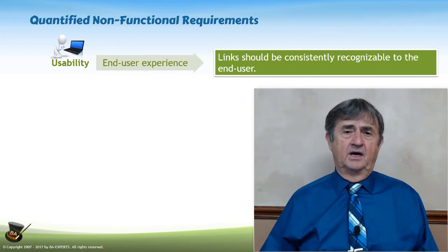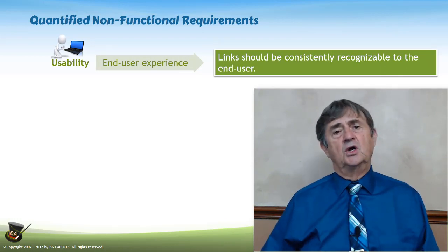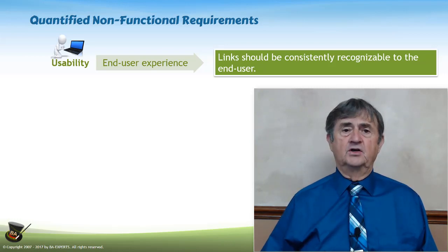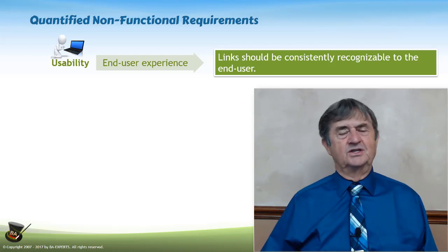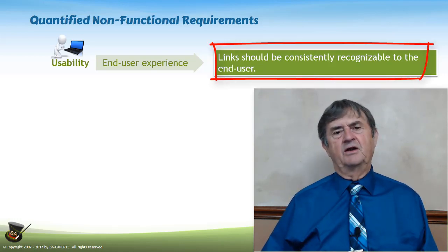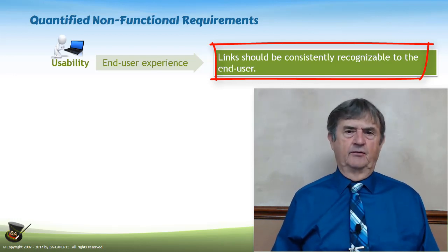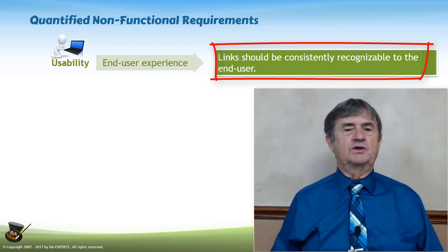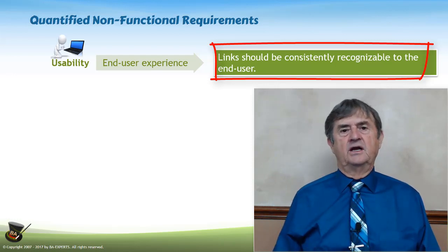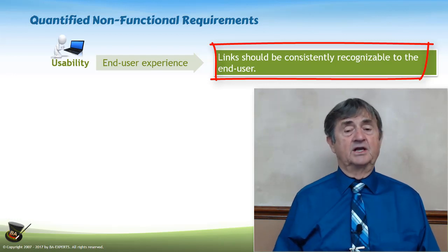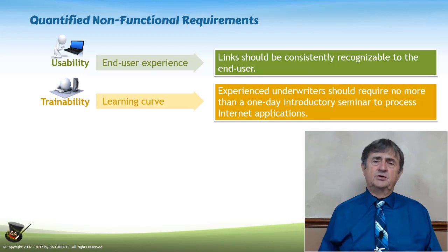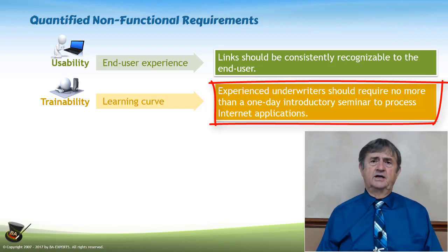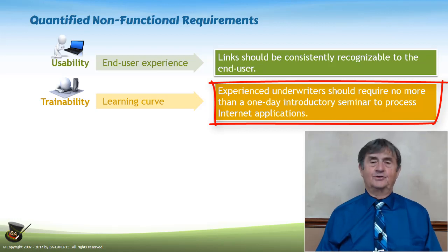Here are a couple of examples of how we go from non-functional requirement statements that are subjective into quantifiable, measurable, or testable non-functional requirements. In the usability domain — one of the very big ones in the world of NFRs — having to do with end-user experience, we've identified that users want links on their website to be consistently recognizable, such as being underlined. We didn't want to restrict developers to underlines specifically, but the user community recognized they need requirements that are recognizable in some way by the end-user. Trainability has to do with the learning curve — for example, an experienced underwriter should be able to process internet applications after a one-hour or one-day introductory seminar.